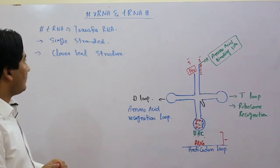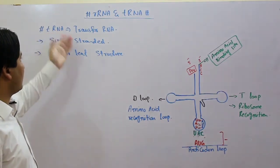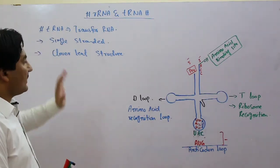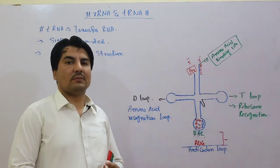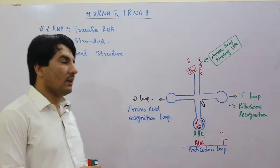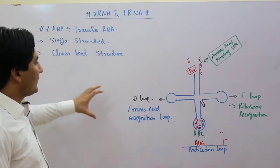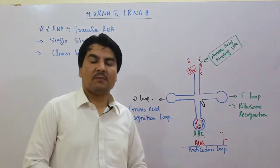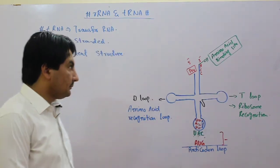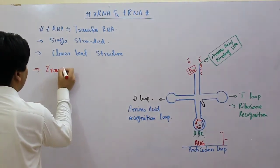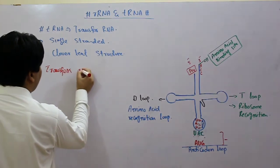The first one we are going to discuss is transfer RNA. Transfer RNA — it can be written as tRNA. This is single-stranded, just like other RNA molecules. RNA ke jo dosre molecules hote hain unke tarah ye bhi single-strand hota hai. Aur iska jo structure hai, that structure is cloverleaf structure. Its function is it transfers amino acids.